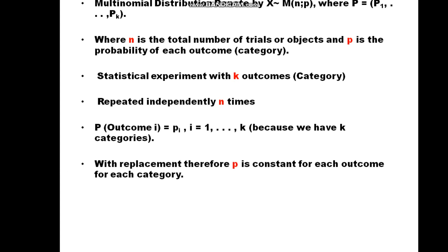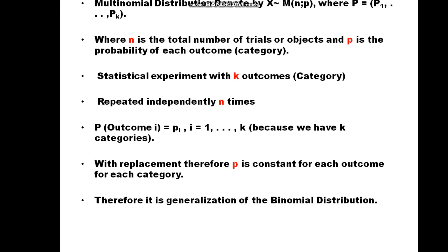This distribution, as with the binomial distribution, is with replacement. Therefore P is constant for each category, and because of that it is a generalization of binomial distribution.